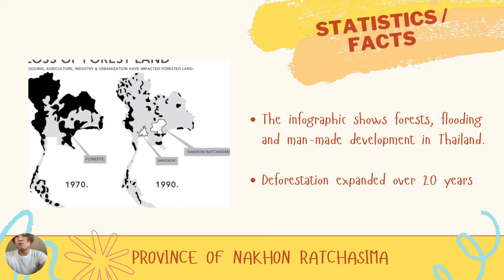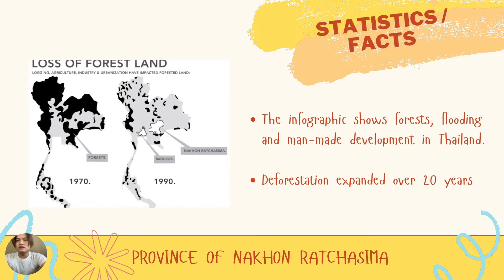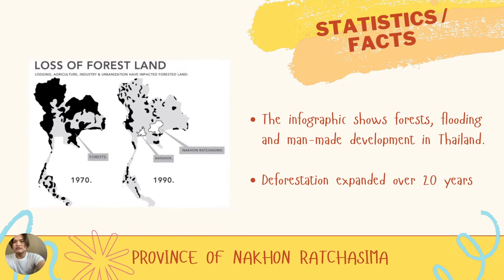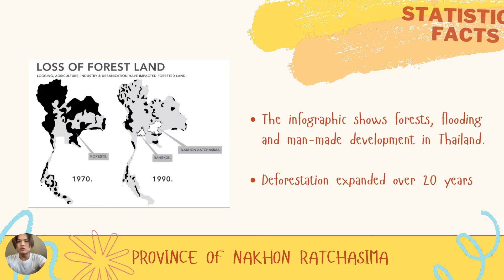This is the first topic. This graphic shows the forest planting and man-made development in Thailand. We can see that there was more forest in 1920 than in 1990. This is how deforestation has exploded over 70 years.